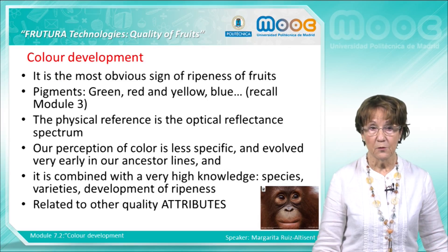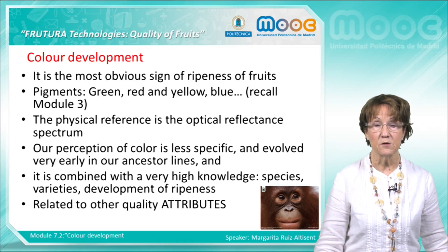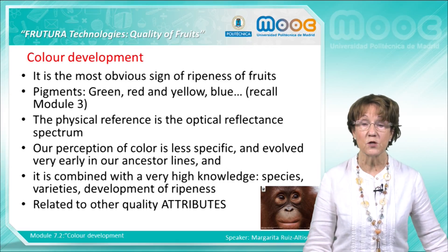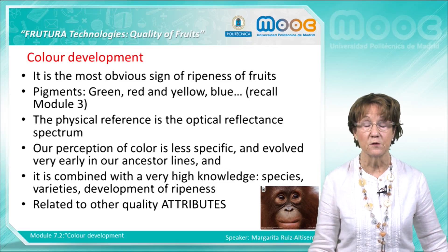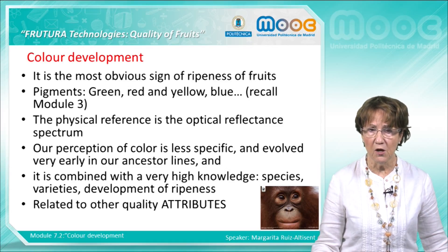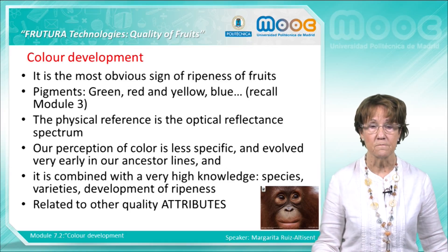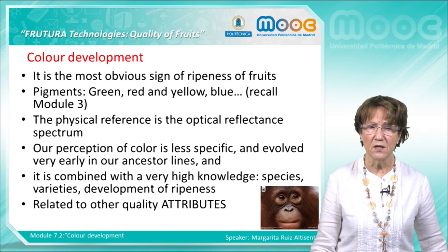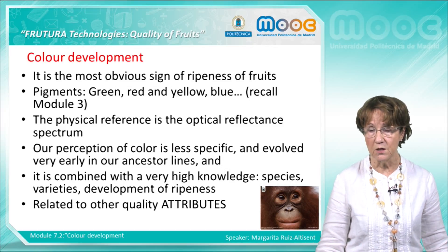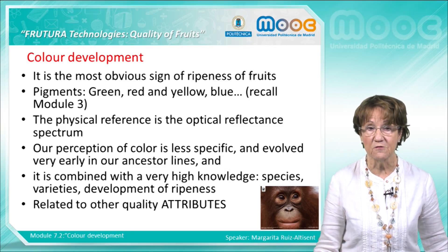Color and color development is the most obvious sign of ripeness of fruits. Pigments are green, red, yellow, and blue — we have already talked about this, and also recall what is presented in module 3. The physical reality for color is the optical reflectance spectrum, which we will see a little bit. Our perception of color is much less specific than what we can measure with our instrumentation, and it evolved very early in our ancestral lines.